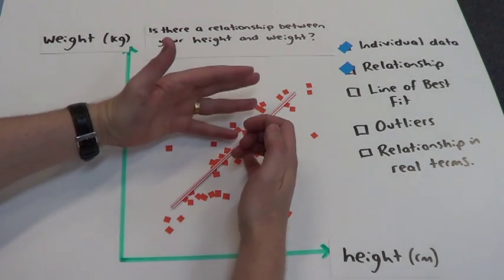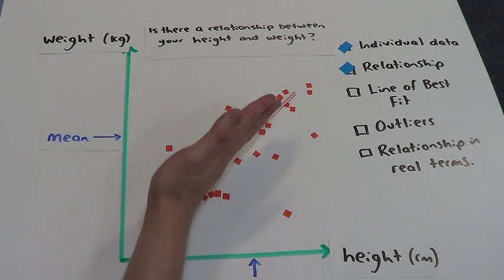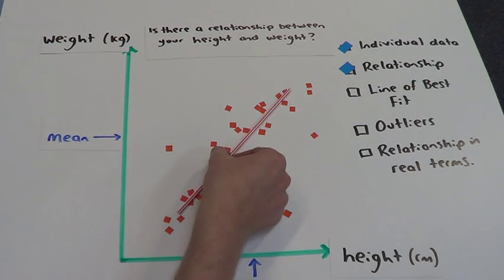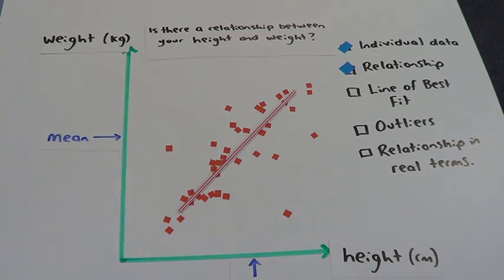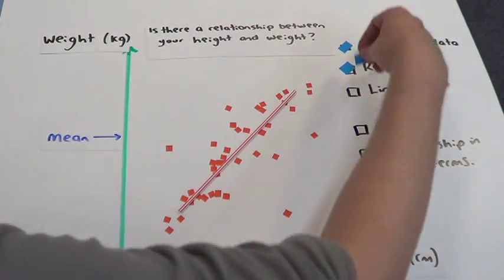Anchoring it, I'm trying roughly to put half of the points above and half the points below. So there is my line of best fit.